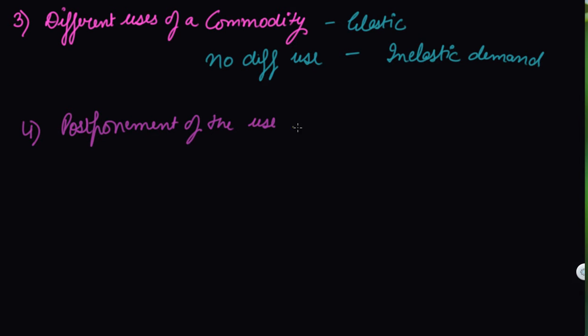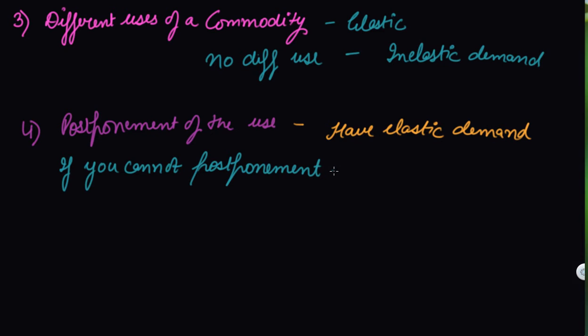If you think that in future the price of cement and bricks will fall down, you will postpone its use for the future - you will wait for the prices to come down. So in this case it is more elastic and has elastic demand. If you cannot postpone, then you cannot do anything about the change in the prices, so you have to take the particular commodity - that is inelastic demand.